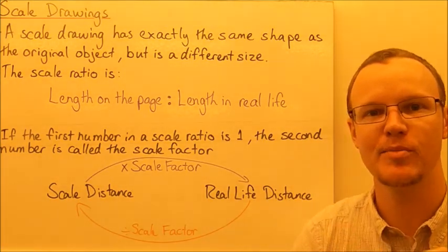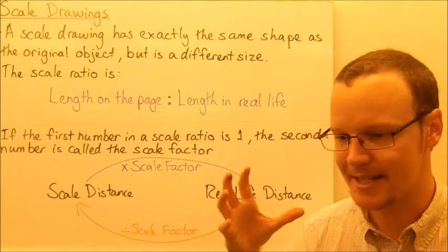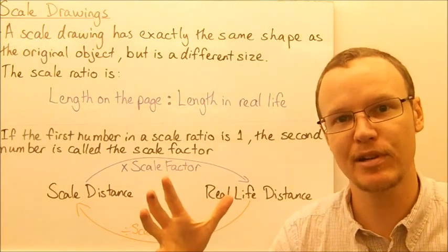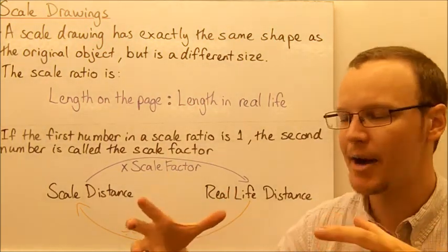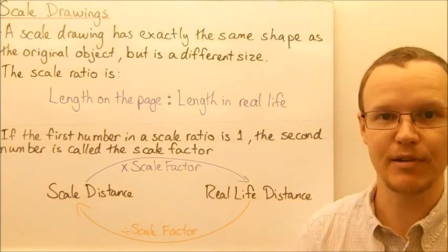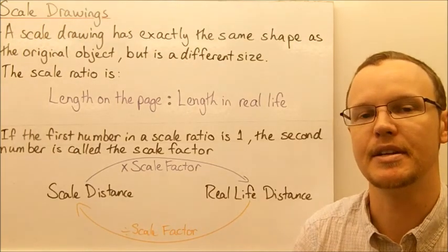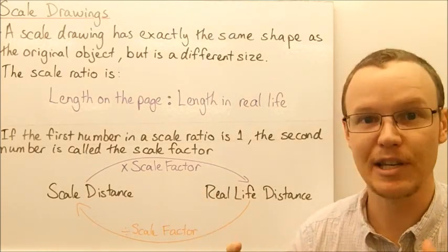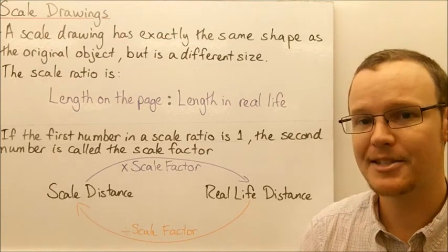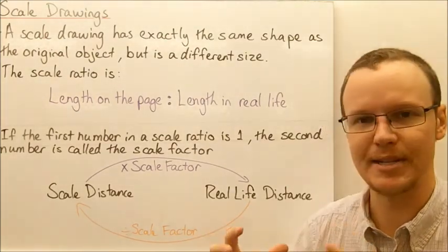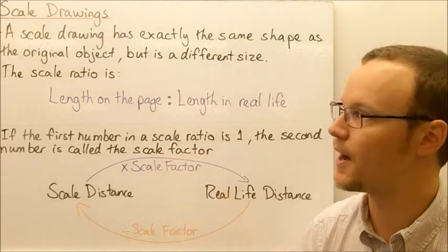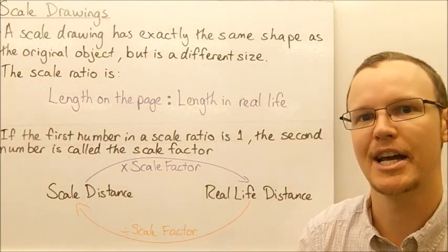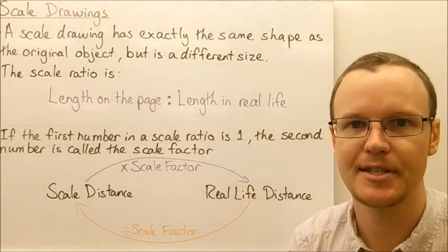Scale drawings you might see around include scale models. A scale model is a three-dimensional representation of something — it has exactly the same shape, just increased or decreased in size depending on the object. For example, scale model cars have been decreased in size by about 14 times, and scale model insects have been blown up. Maps are another example — a much smaller representation of land so you can see different distances.